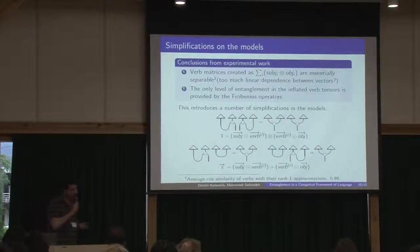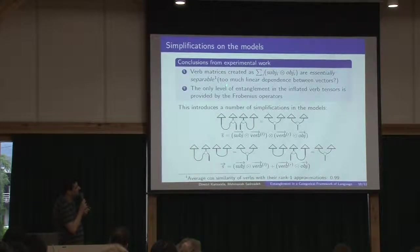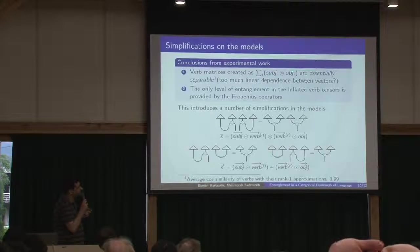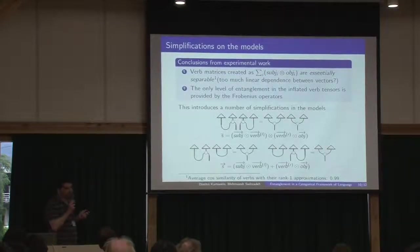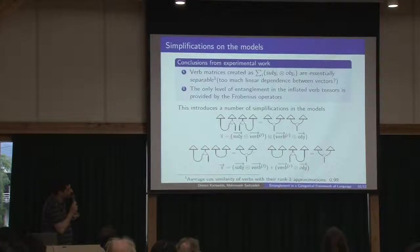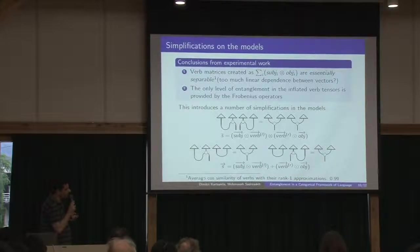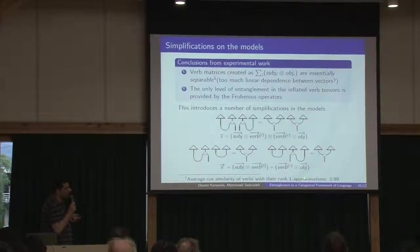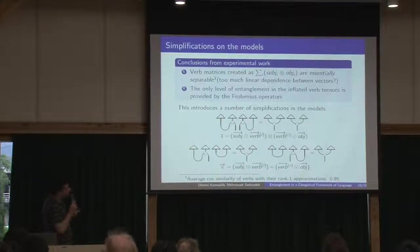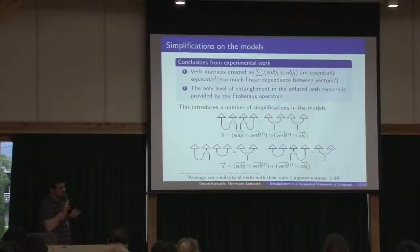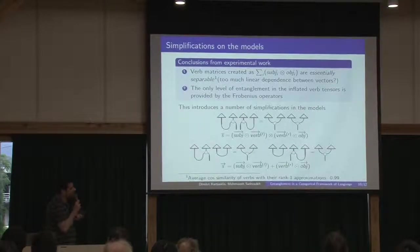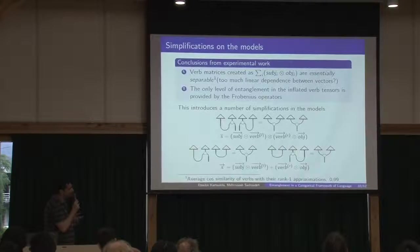So what these results showed to us is that when we compute our verb matrices as this equation here, these are essentially separable for any practical purpose or task. And we tested this by doing an additional experiment. We took the average cosine similarity of the verbs with their rank 1 approximations, and we got this number. So basically there is a level of entanglement because we use Frobenius operators and that's something we did for other reasons. We didn't know that this would have some effect here.